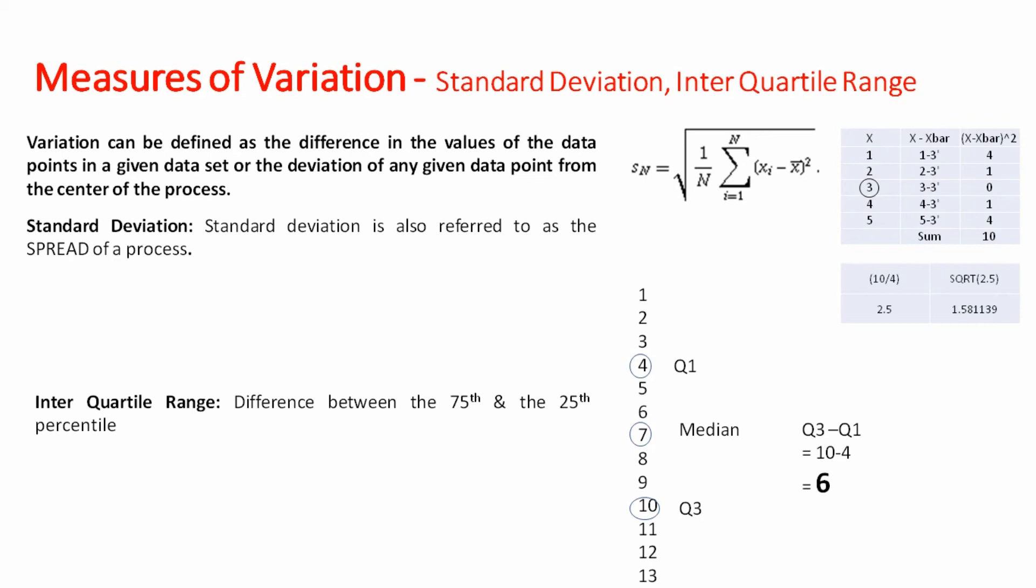When the data is normally distributed we use standard deviation. And when the data is non-normally distributed we use interquartile range. I hope this video has clarified all your doubts about basic statistics. This video would be useful for beginners in Six Sigma. Those who are doing yellow belt. And then it would be useful for green belts as well as black belts also. I hope this video has clarified all your doubts on this topic. In case you need to ask anything you can write in the comment box below.